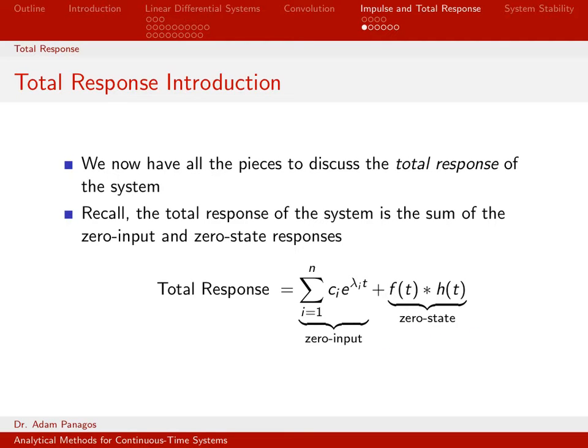That's why we started working on how to compute the zero input component of the solution. This equation as written assumes that all the eigenvalues of your characteristic equation or of your system are unique. So we have taken a linear combination of e to the lambda i t's.